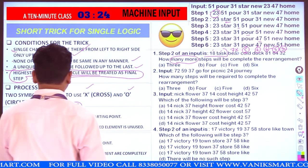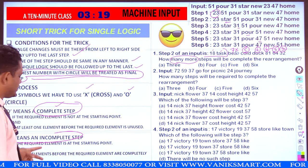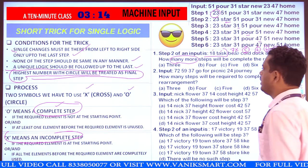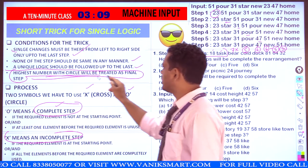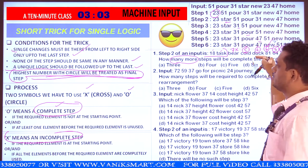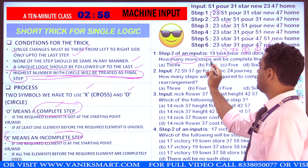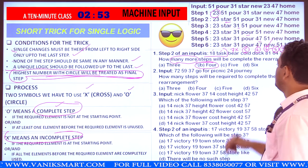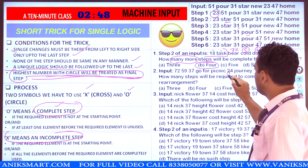Step number 7 — if the required element is at the starting point, and if all the elements before it are qualified, then there will be no difference. So, combining all of this: we reach step number 6. Highest number with circle will be the last step — highest number with circle is 6. The last step is 6, and two numbers are given.